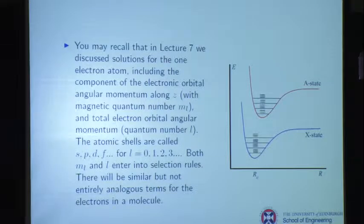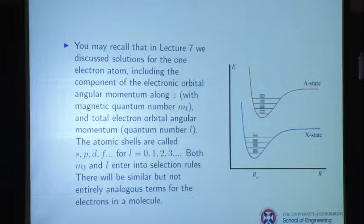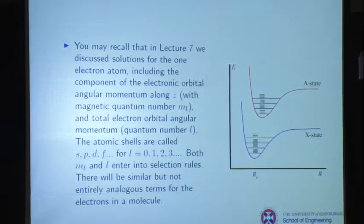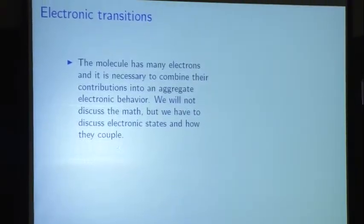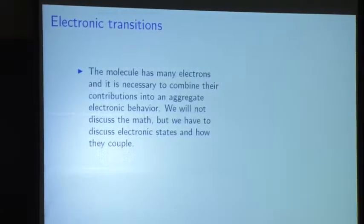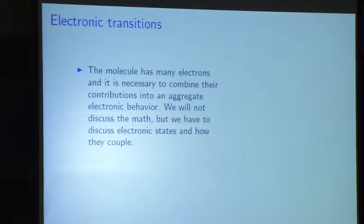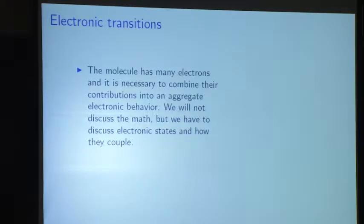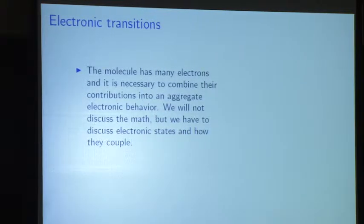Both M and L enter into selection rules for transitions, and we're going to see that pattern repeated, with Z as the internuclear axis. A molecule has a lot of electrons, not just one, and we have to combine their contributions into an aggregate electronic behavior, which makes it much more complicated. There is some fairly complicated analytical math for a multi-electron atom. People try to do the same thing for molecules, and then they kind of wander off the edge of a cliff — they try to combine two different approaches. It's all actually kind of ad hoc.